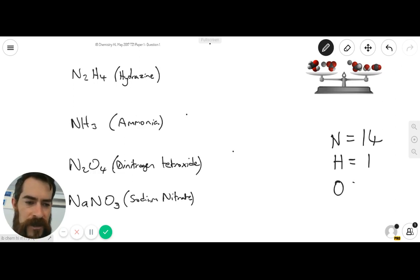Then we also have oxygen here, which is a relative atomic mass of 16, and sodium, which has a relative atomic mass of 23. So that should be all the four elements that we're looking at here.